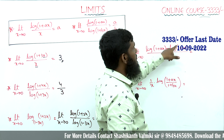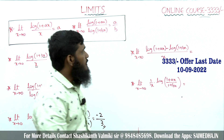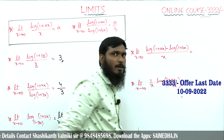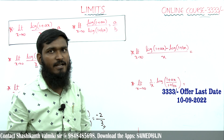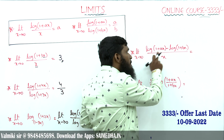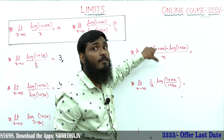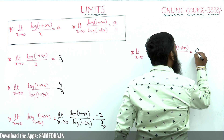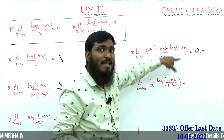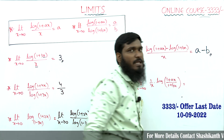Next: limit x tends to 0, [log(1 + ax) minus log(1 + bx)] divided by x. We split the denominator: log(1 + ax) divided by x equals a, and log(1 + bx) divided by x equals b. Therefore the answer is a minus b.